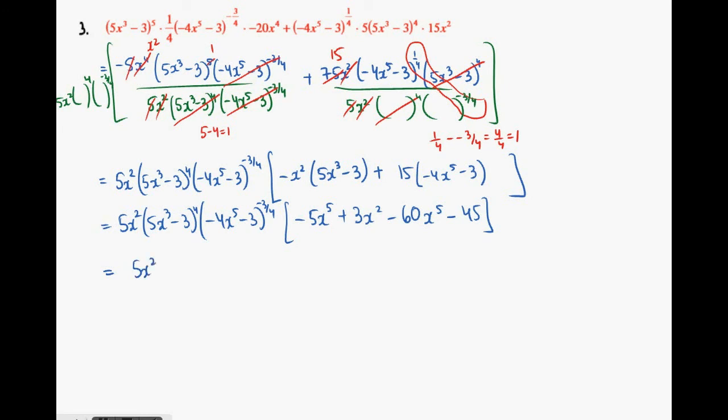Notice that there is one bracket with a negative exponent that we can pull down. Negative powers are just reciprocals. Just make sure you pull down only the negative power. We'll have negative 4x power 5 minus 3 with a positive exponent 3 quarters in the denominator. Then simplifying like terms, we'll have negative 65x power 5 in the rest of the terms.